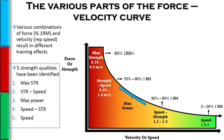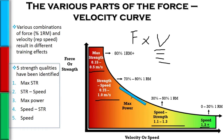Previously when I introduced this graph, I pointed out the speeds at which we are moving — force times velocity. We can literally measure the speed at which the bar is moving. Generally, 80% of the 1RM can be moved at a particular speed, 50% of the 1RM at another speed, and 30% at yet another. It's the actual speed at which we are moving that interacts with force to give us our training effect.